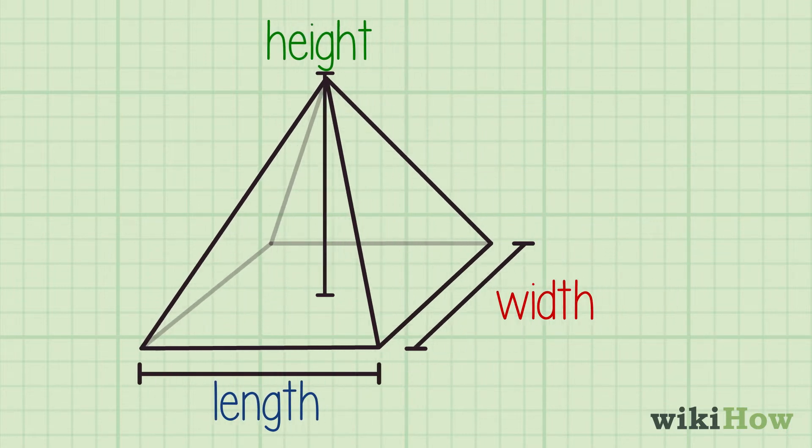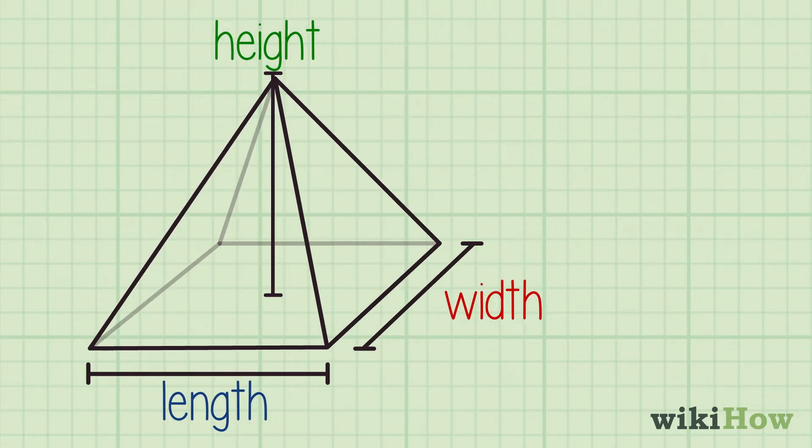Once you have that information, you can find the volume using the formula v, or volume, equals one-third times ab, ab being the area of the base, times h being height.